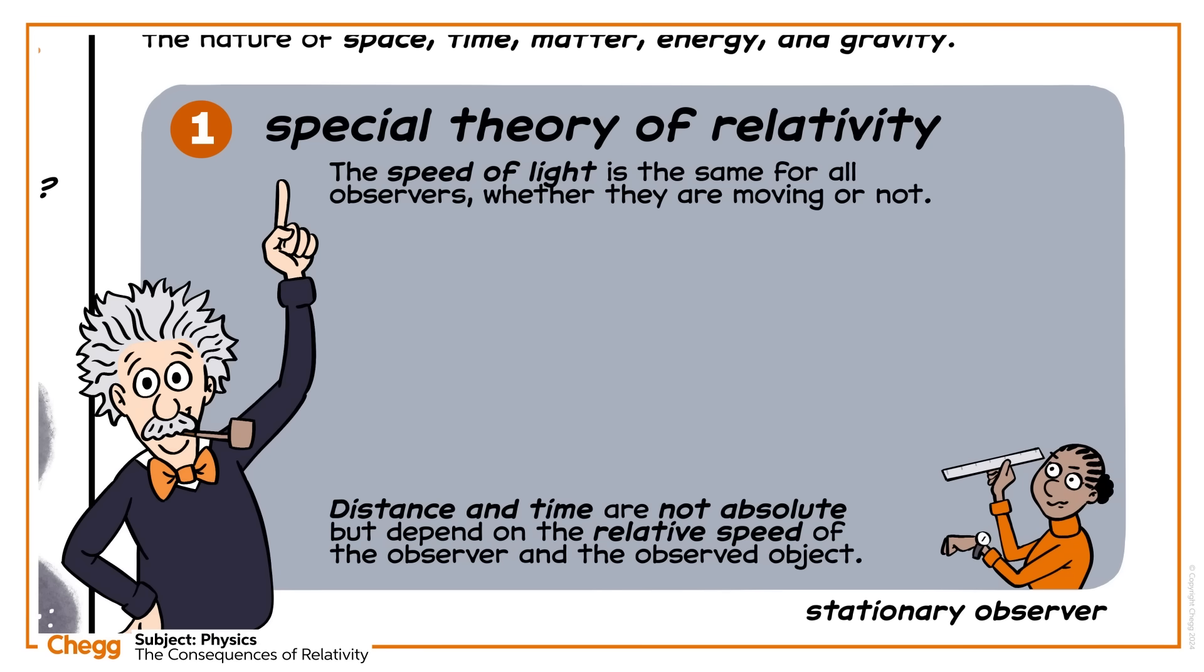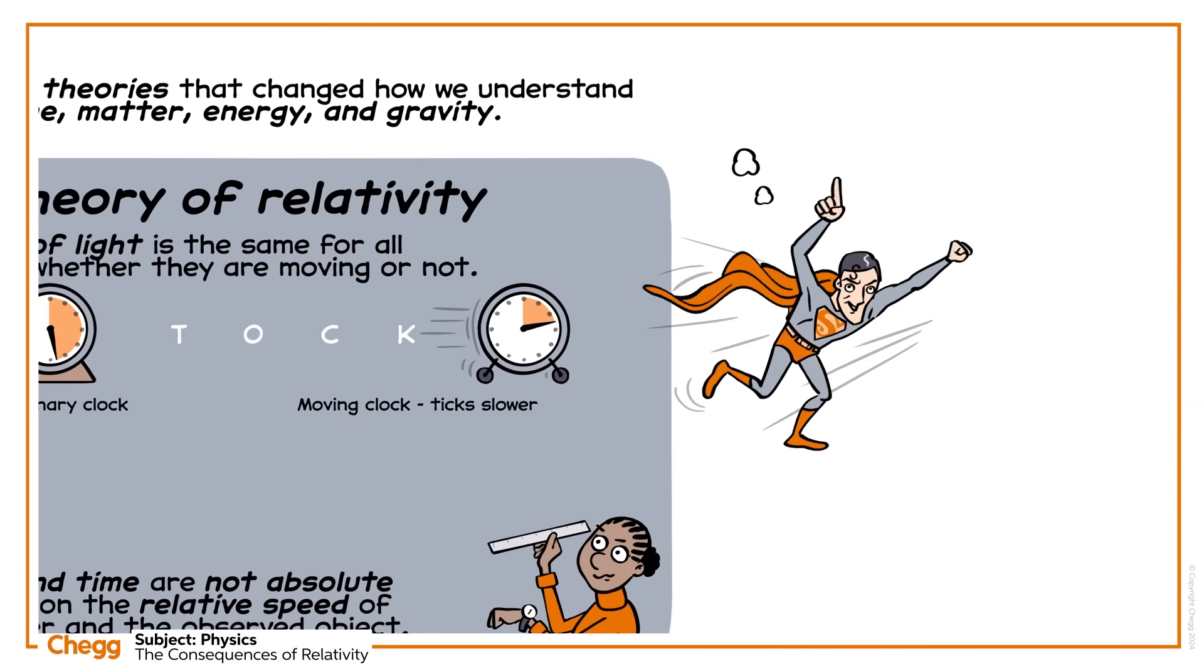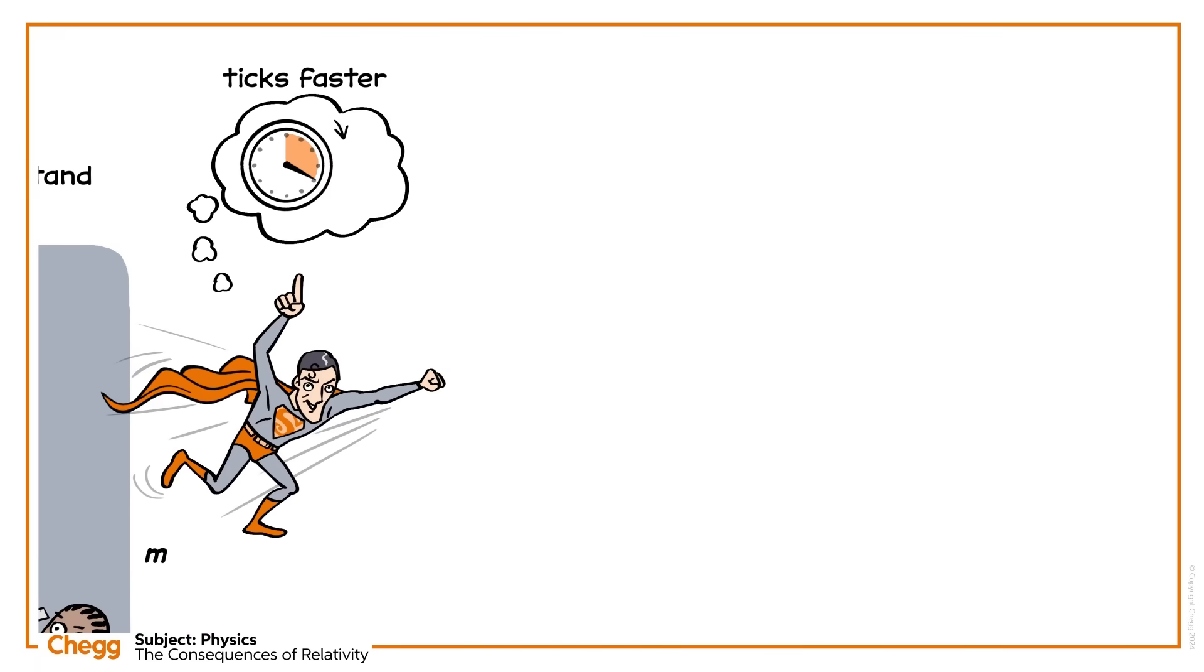For example, a clock moving close to the speed of light will appear to tick slower than a stationary one, and a clock will appear to tick faster to an observer in motion.